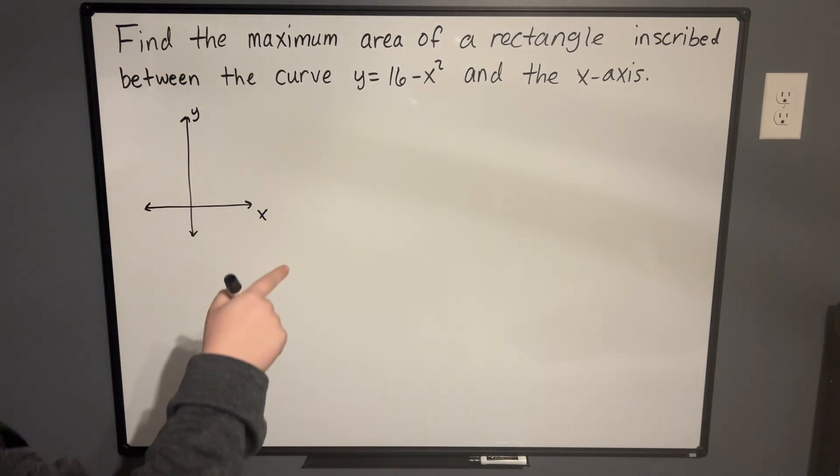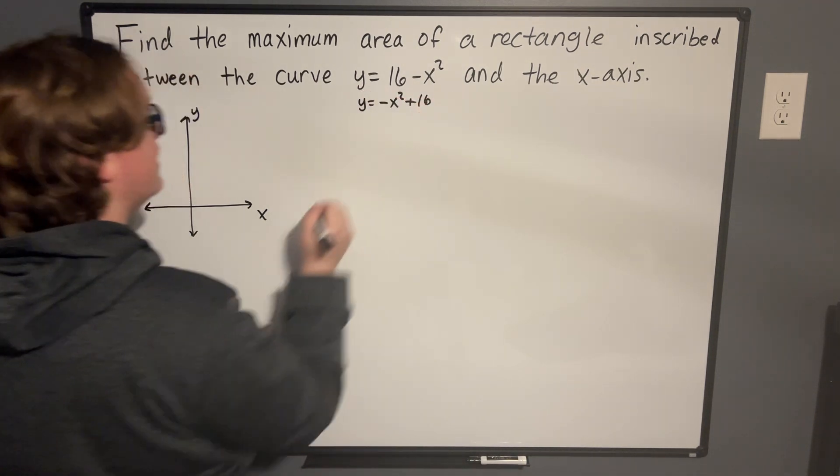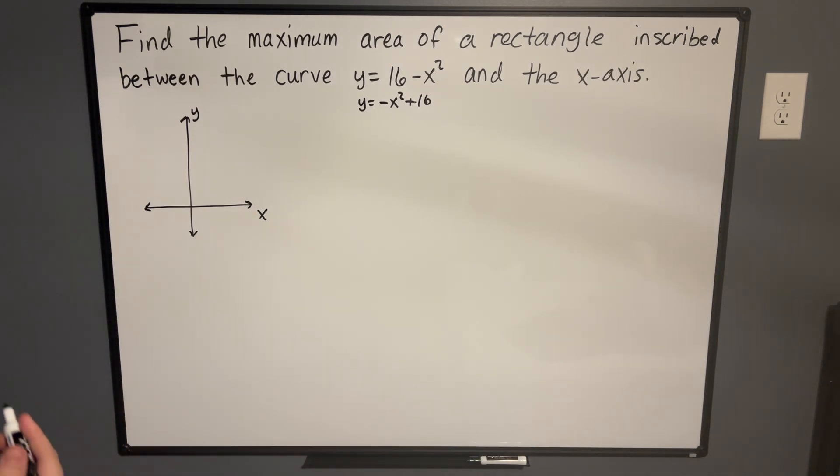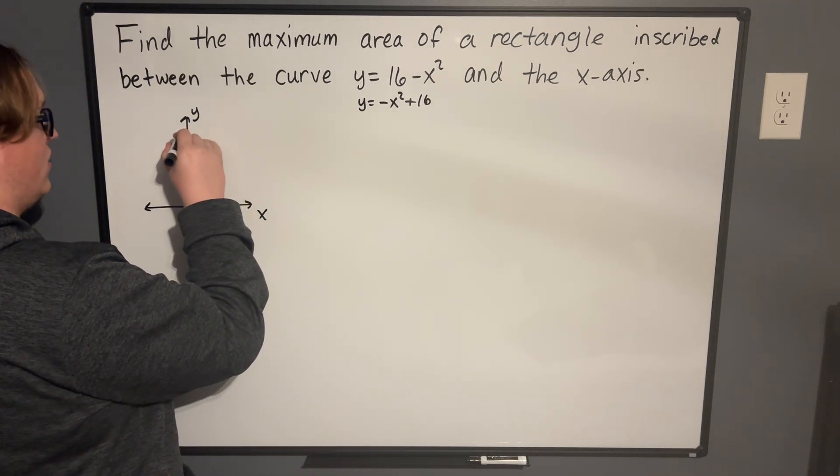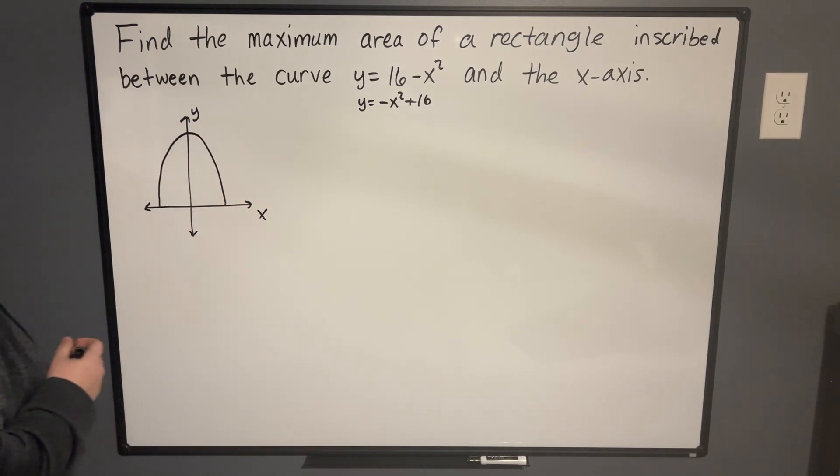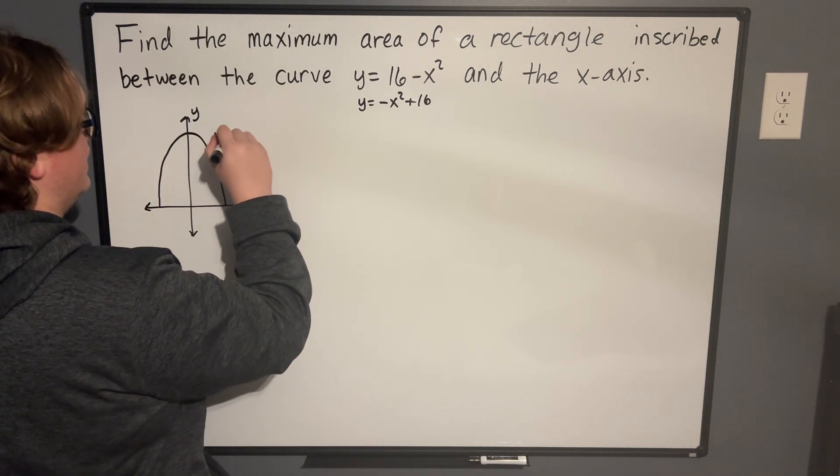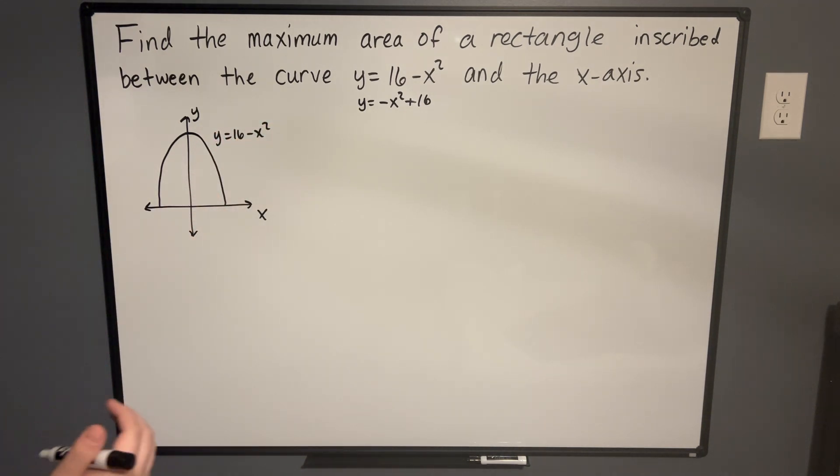Now, we need to draw the curve y equals 16 minus x squared. Notice this is the same thing as y equals negative x squared plus 16. So what's happening is this graph of y equals x squared is being reflected about the x-axis, and it's being brought up 16 units. So when that is actually drawn, it'll look something like this. This is our curve y equals 16 minus x squared. The other boundary portion is going to be the x-axis, so we have that drawn out already.